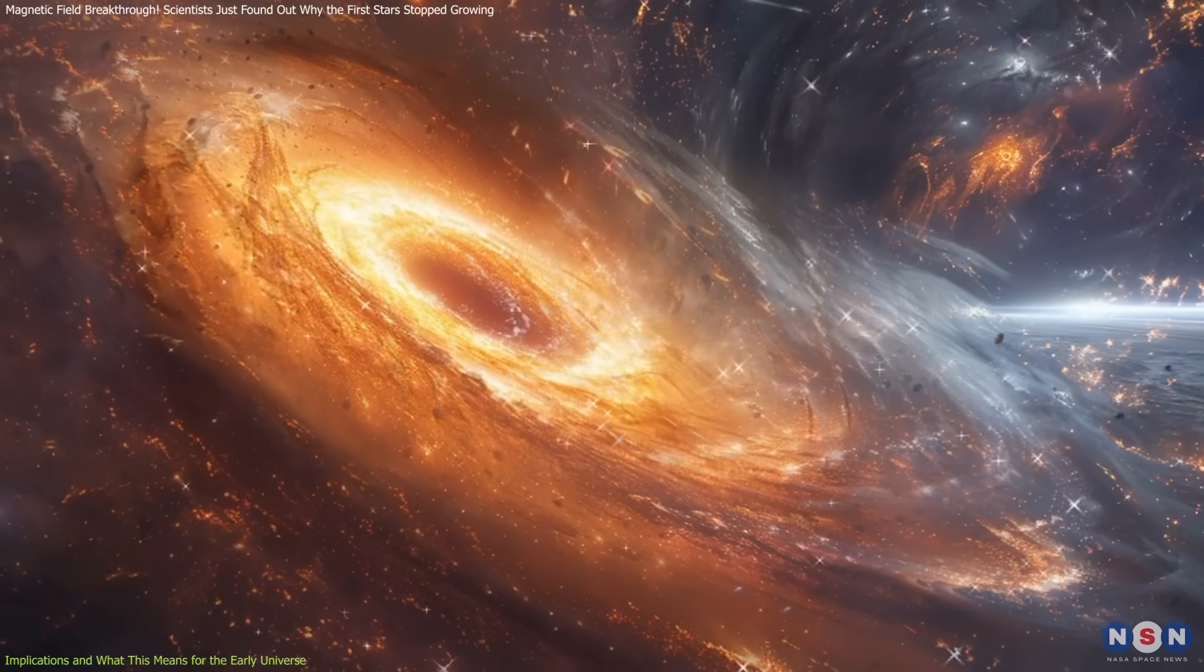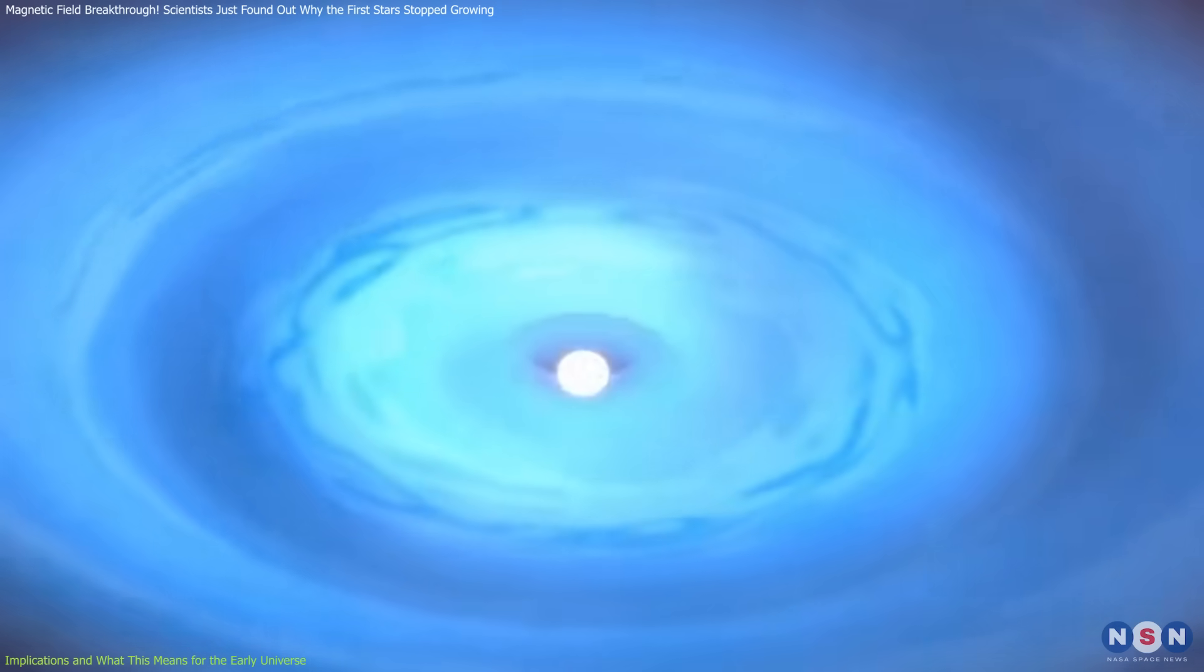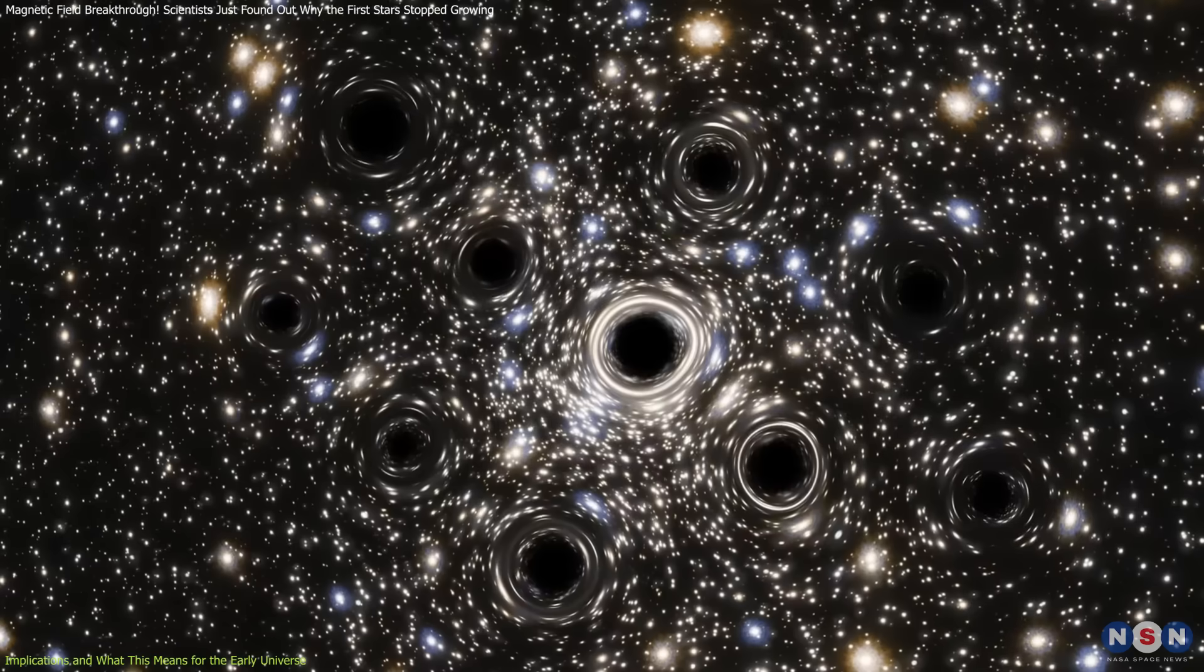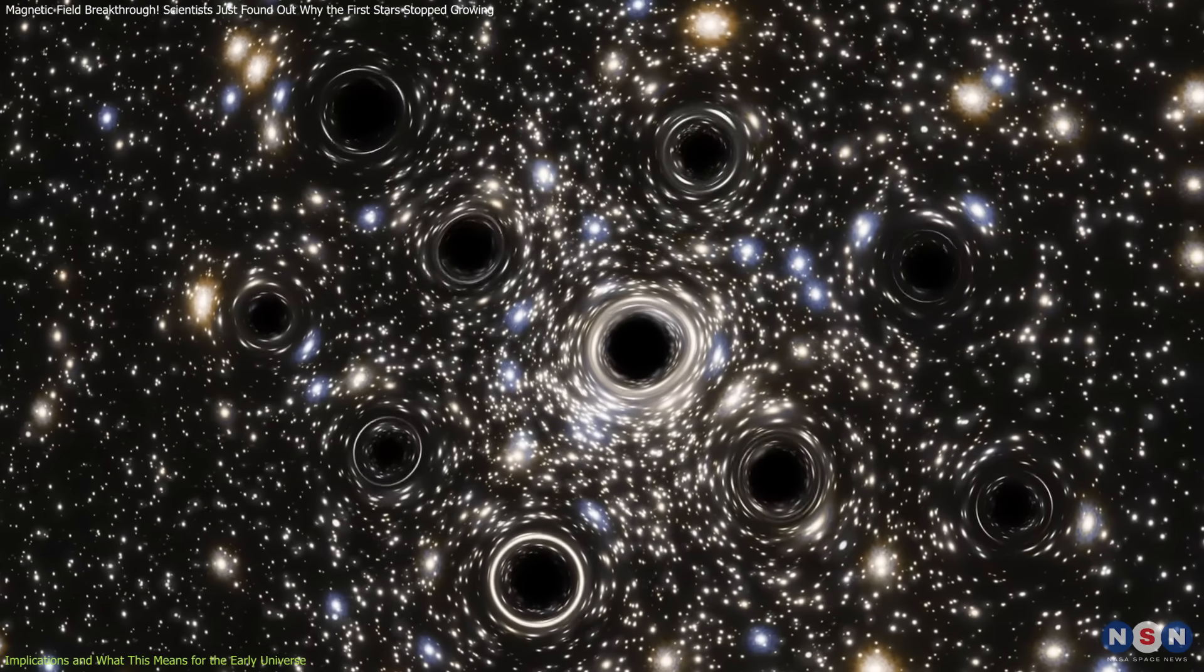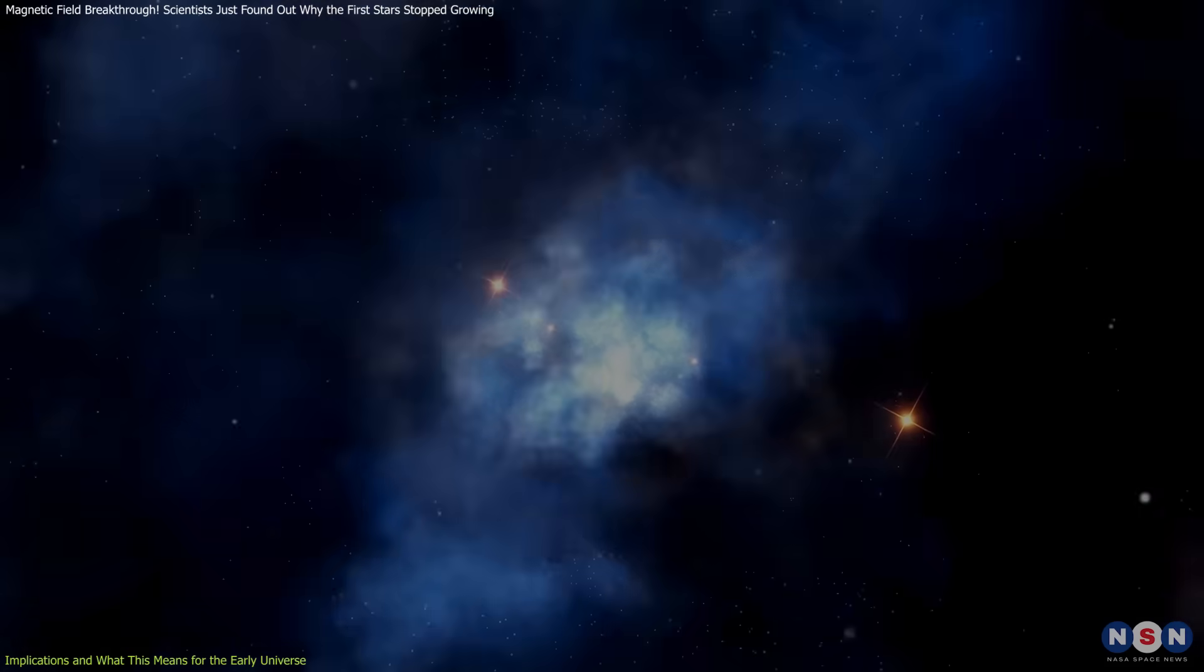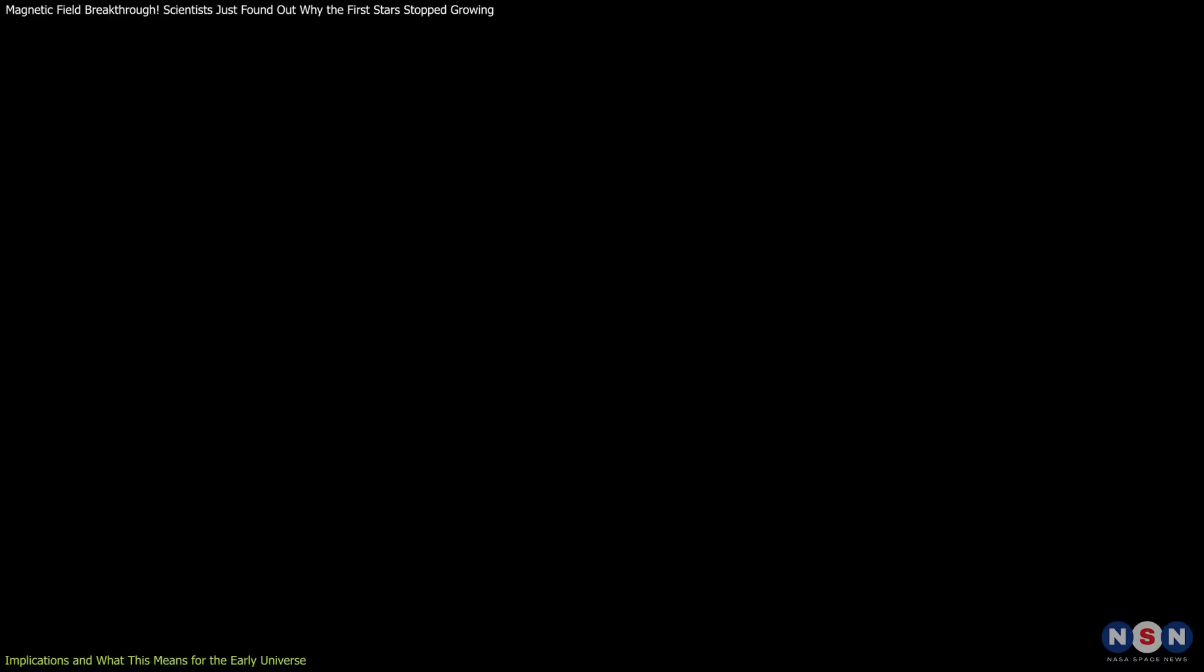It also changes how we think about the formation of the first black holes. Some theories suggest that the largest Population III stars collapsed directly into black holes, seeding the growth of supermassive black holes. However, if these stars were smaller than previously estimated, then this process might not have been as common as we thought.